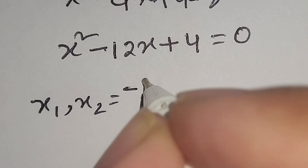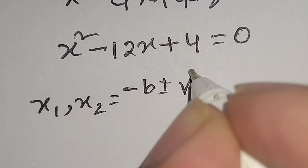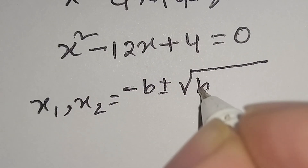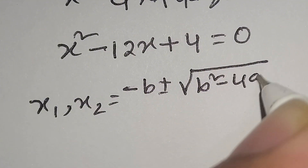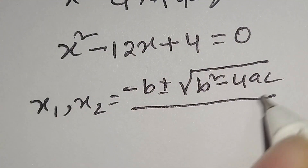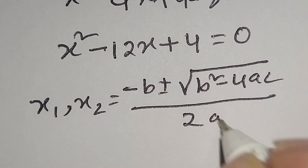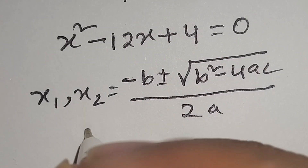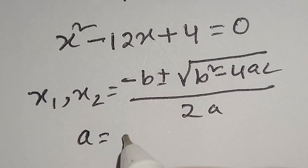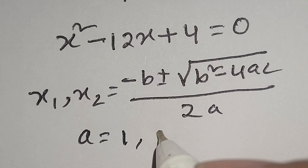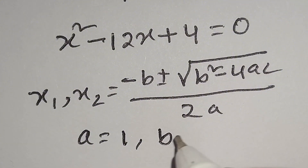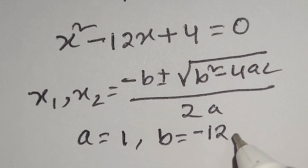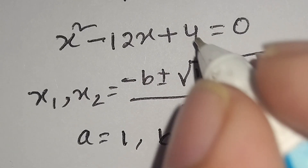So here x1 and x2 is equal to minus b plus or minus square root of b² minus 4ac, all over 2a. Here a is equal to 1, b is equal to minus 12, and c is equal to 4.